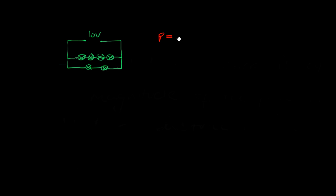There is a higher voltage across the two-bulb branch than the four-bulb branch. Since brightness depends on power, and power equals current times voltage, we're tempted to say the two-bulb branch will be brighter because the voltage across them is higher. But we also need to consider what's happening with the current.